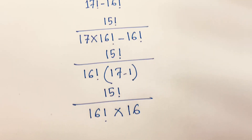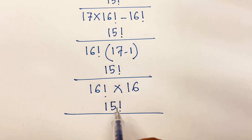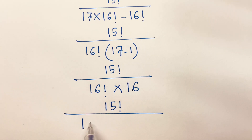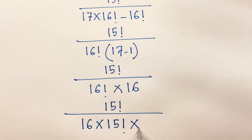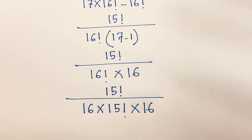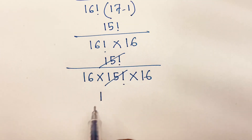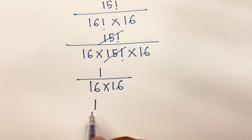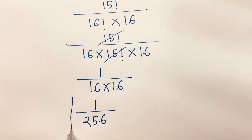Then I can say here is 15 factorial over 16 factorial, and 16 factorial equals 16 times 15 factorial. These 15 factorials cancel, so it will be 1 over 16 times 16, which equals 256. So the final answer is 1 over 256.